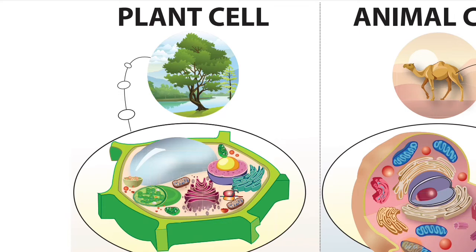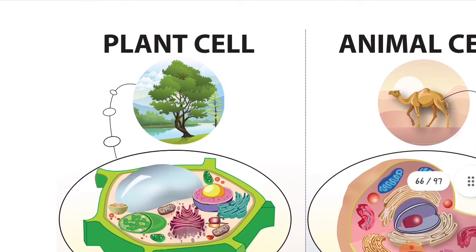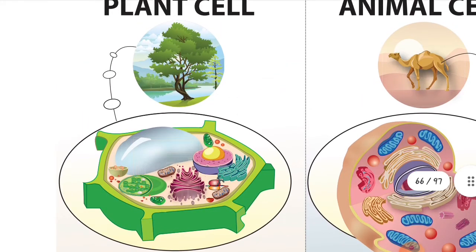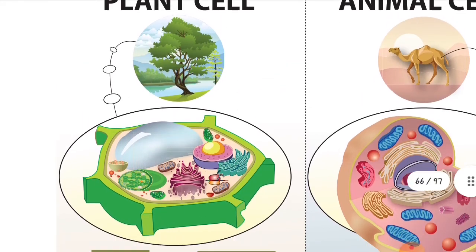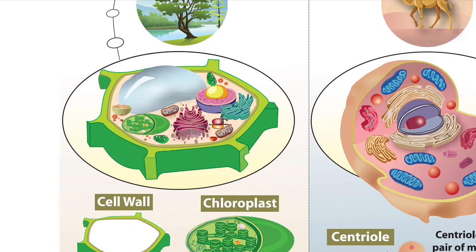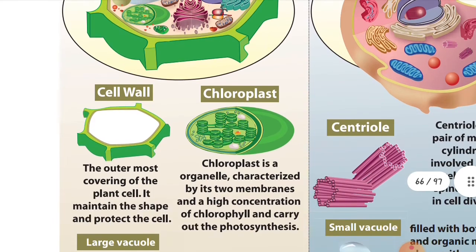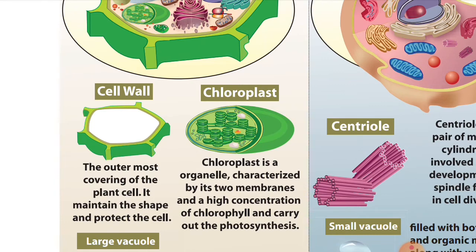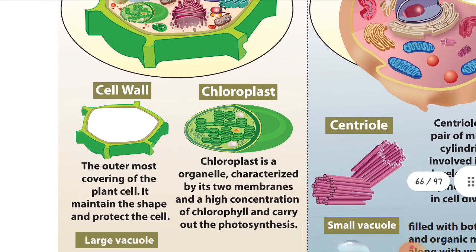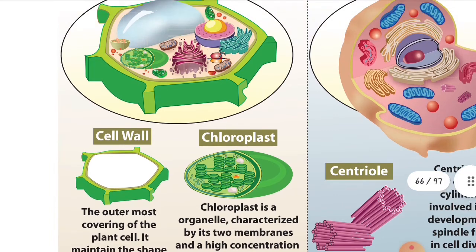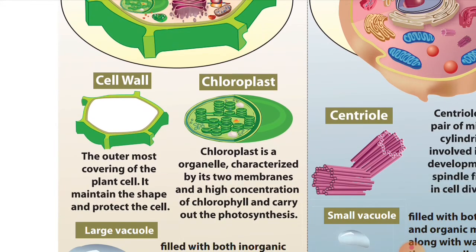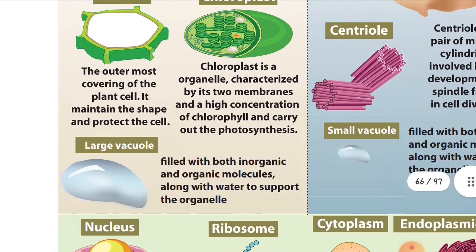Now let's see the plant and animal cell comparison diagram. For the plant cell: it has a rigid shape protected by the cell wall. The cell wall is the outermost covering of the plant cell — it maintains the shape and protects the cell. Next is the chloroplast — the green-colored organelle characterized by two membranes and high concentrations of chlorophyll, which carries out photosynthesis.